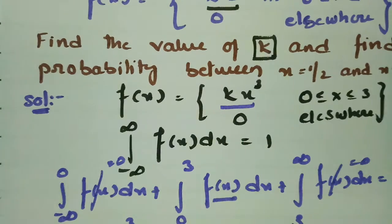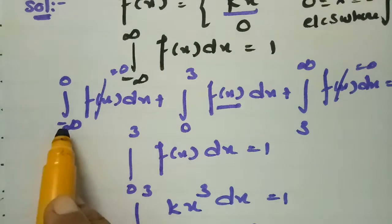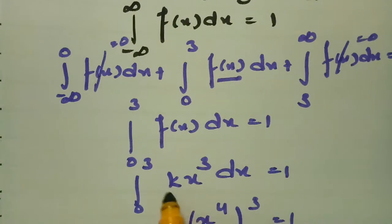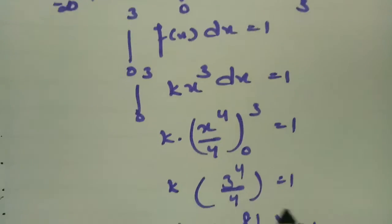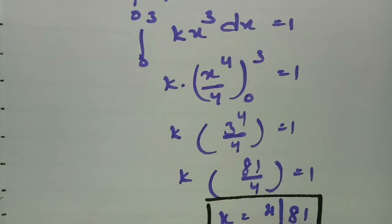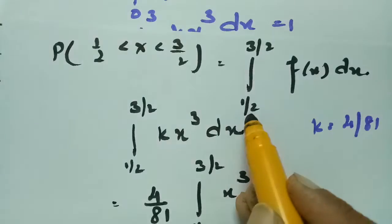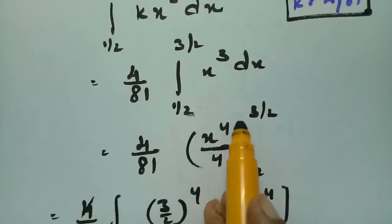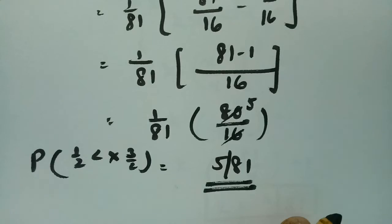To summarize: f(x) = k·x³ for x between 0 and 3. Using total probability equal to unity, we integrate k·x³ from 0 to 3, giving k times x⁴/4 evaluated at 0 and 3, which yields 81/4, so k = 4/81. Then for P(1/2 < x < 3/2), substituting k and integrating x³ gives x⁴/4 between the limits, which simplifies to 5/81. Thank you for watching.